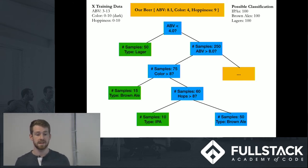And through that, we want to get the most probable answer for this test case we have up here, which we've given an 8.1 alcohol per volume. We've given a color of 4 and a happiness of 9. So this is kind of what's happening behind the scenes.